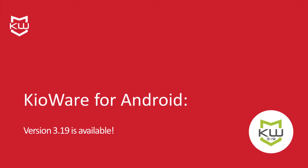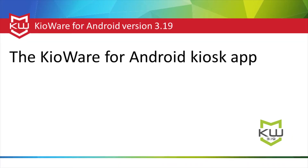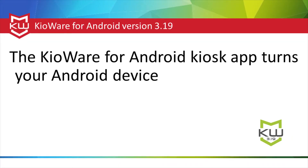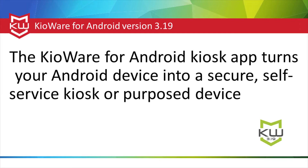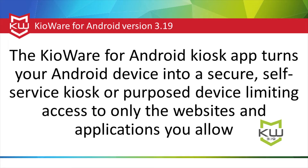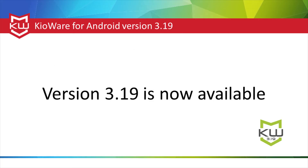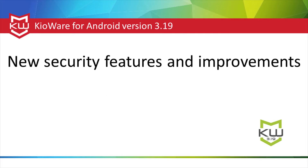KeyWare has released version 3.19 of KeyWare for Android. The KeyWare for Android kiosk app turns your Android device into a secure, self-service kiosk or purpose device, limiting access to only the websites and applications you allow. Version 3.19 is now available with new security features and improvements to existing functionality.